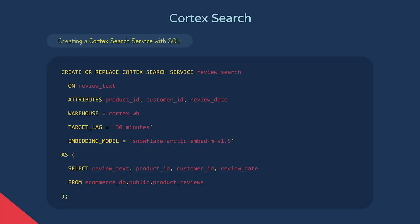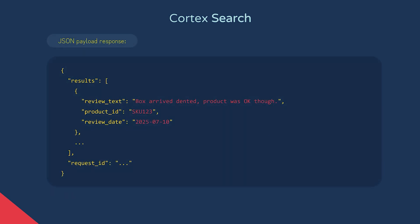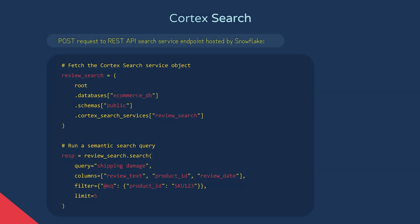To implement this in Snowflake, we create a Cortex Search service. This command indexes the review text column for semantic vector-based searching. Attributes allow you to filter results based on certain columns — here we're using product ID, customer ID, and review date. Target lag specifies that we want the index refreshed every 30 minutes to stay up to date, and here we're setting Snowflake's default embedding model for turning text into vectors. Once the search service is up and running, Snowflake exposes a REST API endpoint where you can send POST requests to run semantic searches, returning a JSON payload. The second option is to query your service using the Snowflake Python SDK, which produces a similar JSON response.